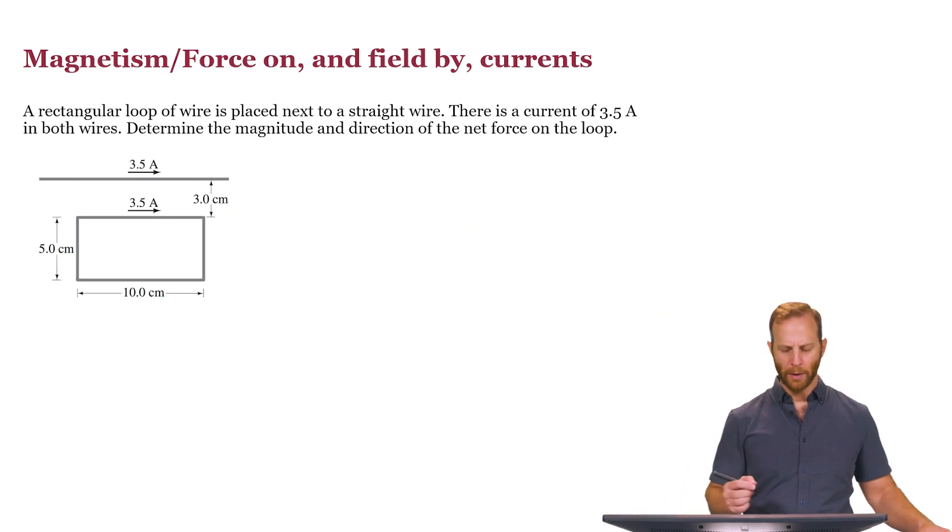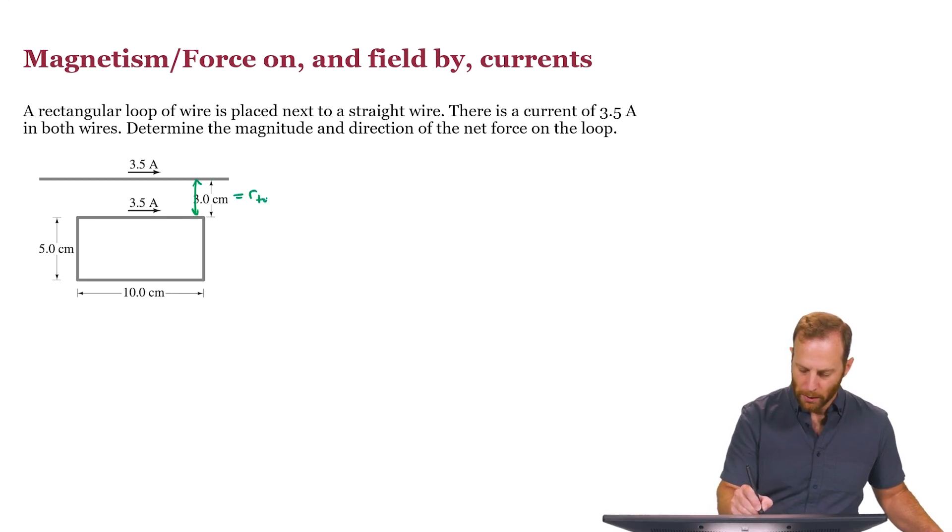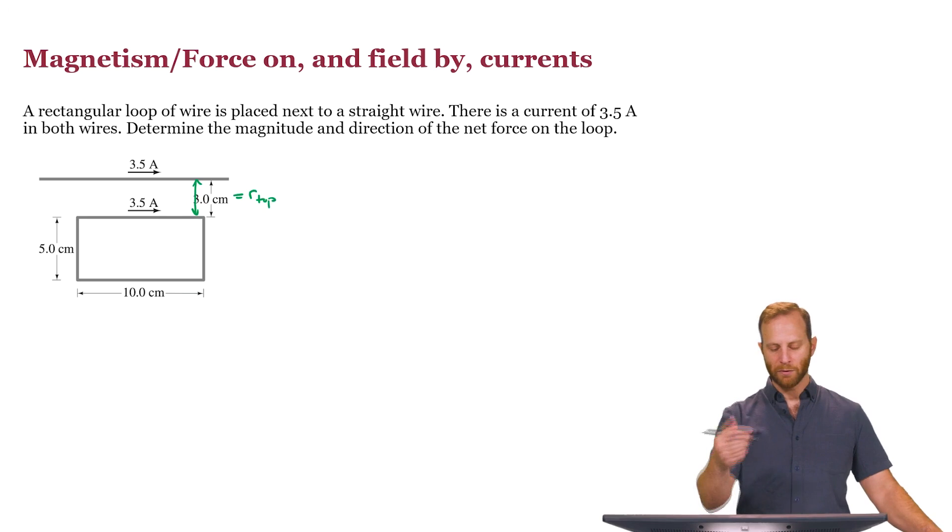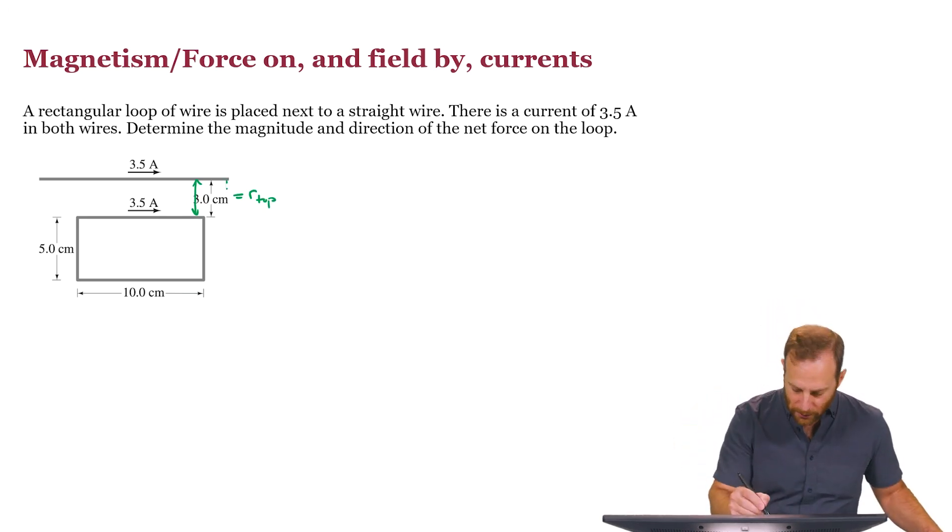Since we're going to label these things top and bottom, what we should do is realize that this distance here, the 3 centimeters, we can call that R top, the distance from the very top wire to the top of the loop. And this distance here, we can call that R bottom, which is 3 centimeters plus 5 centimeters. So that's 8 centimeters.